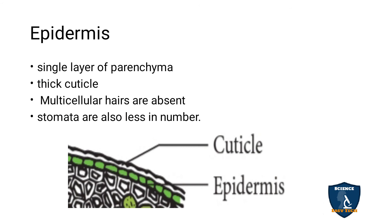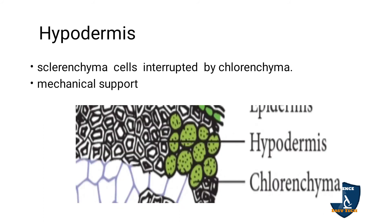In detail: the epidermis is a single layer of parenchyma cells with a cuticle protecting it; stomata are fewer here, and multicellular hairs are absent — unlike in dicot stem. The hypodermis below the epidermis is made up of sclerenchyma (2 to 3 layers). In between the sclerenchyma cells of the hypodermis, chlorenchyma cells are present — chlorenchyma performs photosynthesis, and sclerenchyma provides mechanical support.